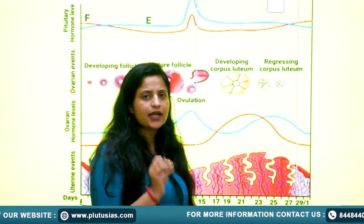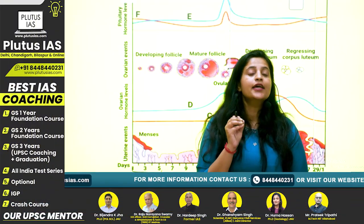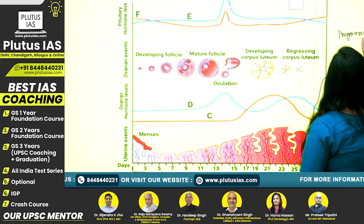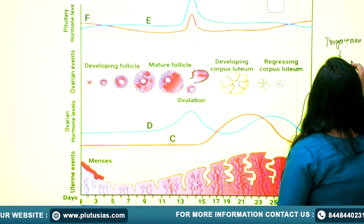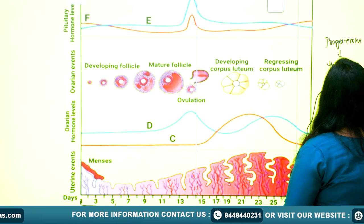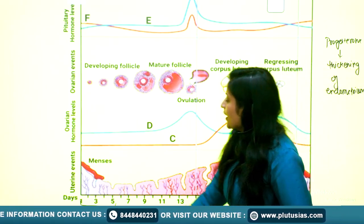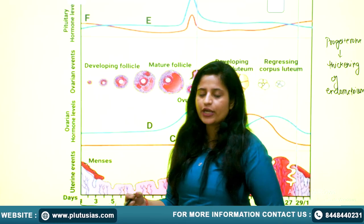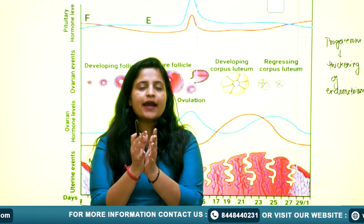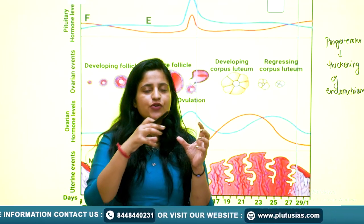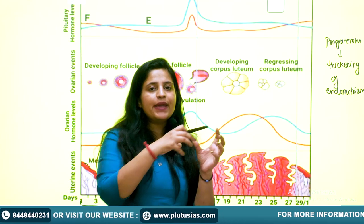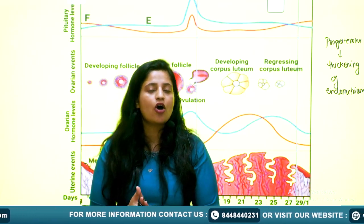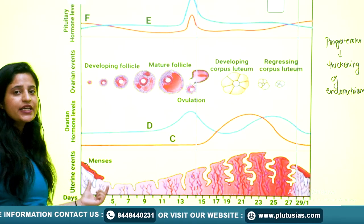The corpus luteum produces progesterone, and progesterone is responsible for the thickening of the endometrium — this is very important. During the menstruation phase (days 1–5), the endometrium sheds off. At that time prostaglandin is released, causing uterine contractions. The smooth muscles and uterine tissues rupture, resulting in bleeding. The female loses around 30 to 40 ml of blood during each menstruation.